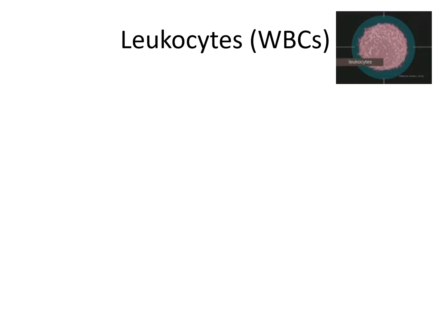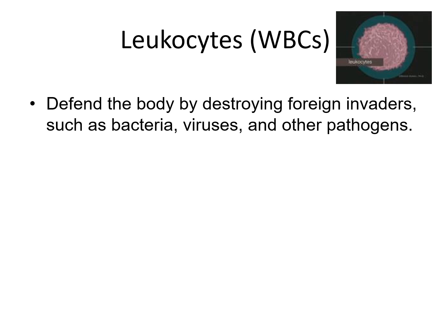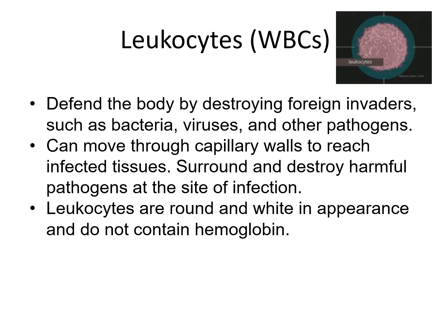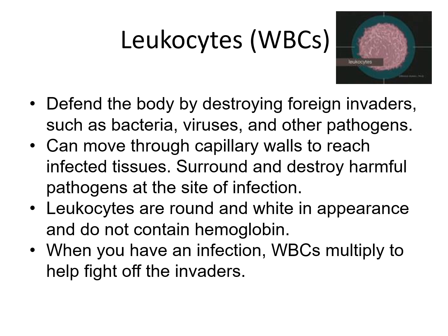Leukocytes can defend the body by destroying foreign invaders such as bacteria, viruses, and other pathogens. They can also move through capillary walls to reach infected tissues, and surround and destroy harmful pathogens at the site of infection. Leukocytes are round and white in appearance and do not contain hemoglobin — remember, hemoglobin is what gives blood cells their red color through a combination of iron and protein. When you have an infection, white blood cells multiply to help fight off the invaders, resulting in an elevated white blood cell count above approximately 9,000.